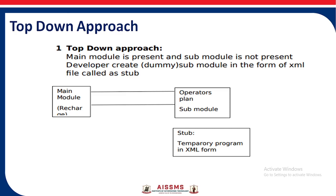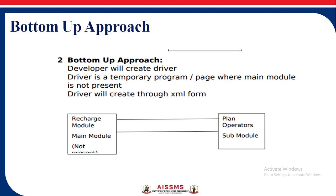To check the stub, we use SOAP UI. The request and responses are in XML language. When we have the main module but do not have the sub-module, then in that case we use the bottom-up approach. In the bottom-up approach, if we have the sub-module but do not have the main module, we use the bottom-up approach. To check the sub-module, the developer creates a dummy main module called a driver. These driver programs are in XML language.